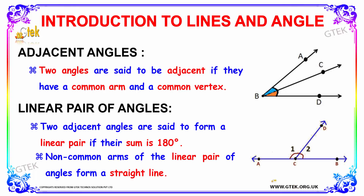Now let's see about adjacent angles. Two angles are said to be adjacent if they have a common arm and a common vertex. You can see B is the common vertex, and the angles ABC and CBD share the common arm BC. This is all about adjacent angles.